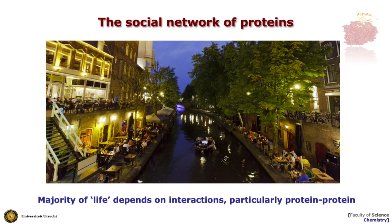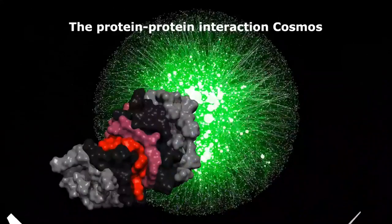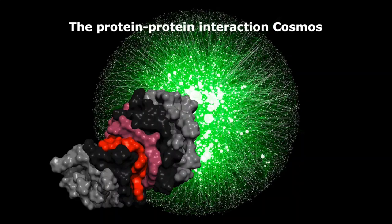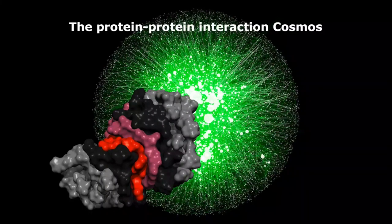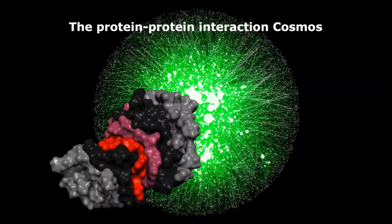So in order to understand the social network of proteins, we need to take the step toward modeling the structure of those interactions. Which brings me to the concept of the interactome. What you are seeing here is an interactome where you see a lot of dots and a lot of lines. The dots represent the proteins, the lines represent interactions between those. These kinds of pictures are obtained typically by high-throughput experimental methods.